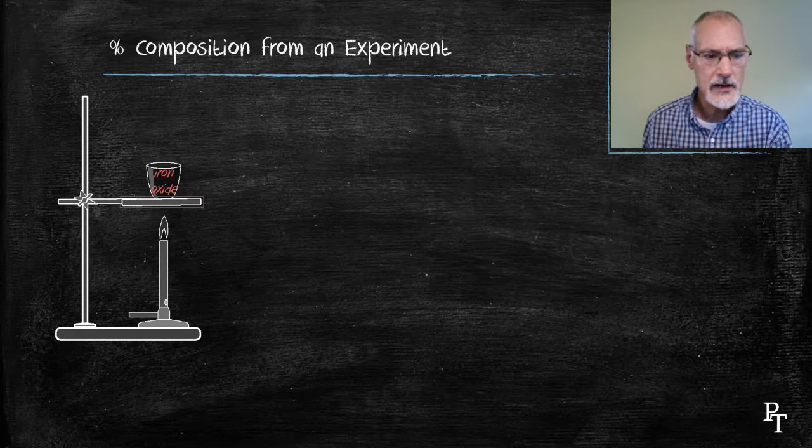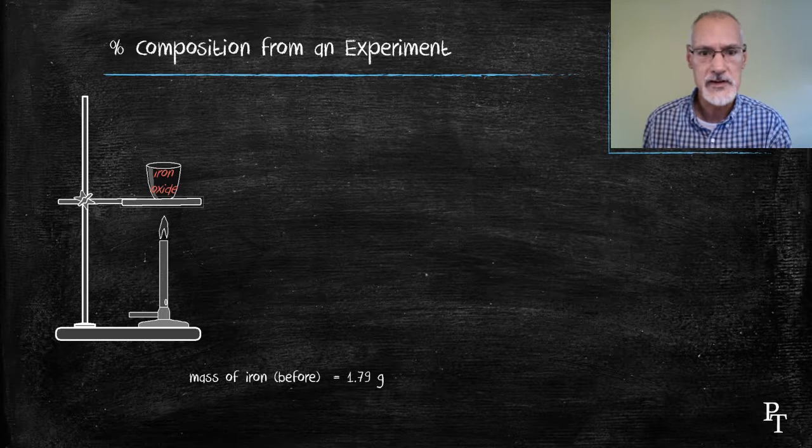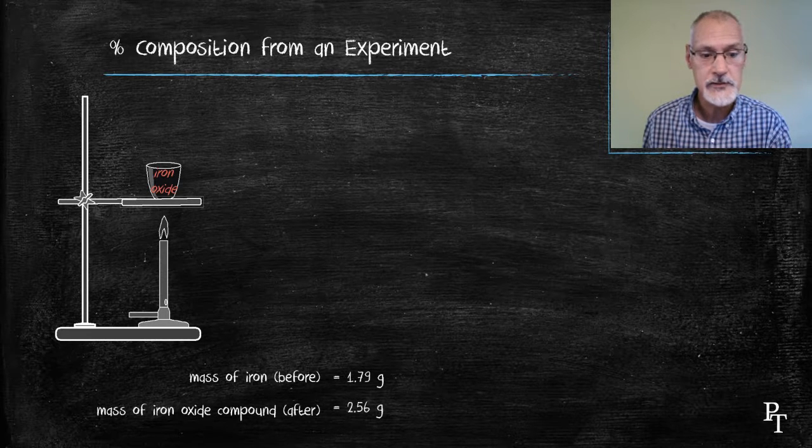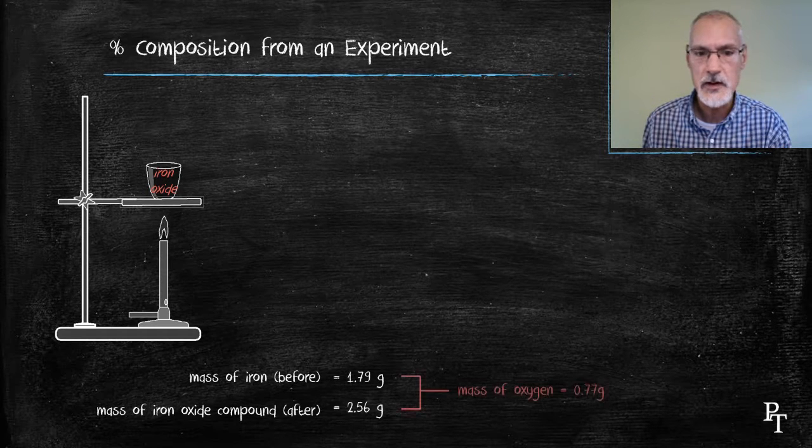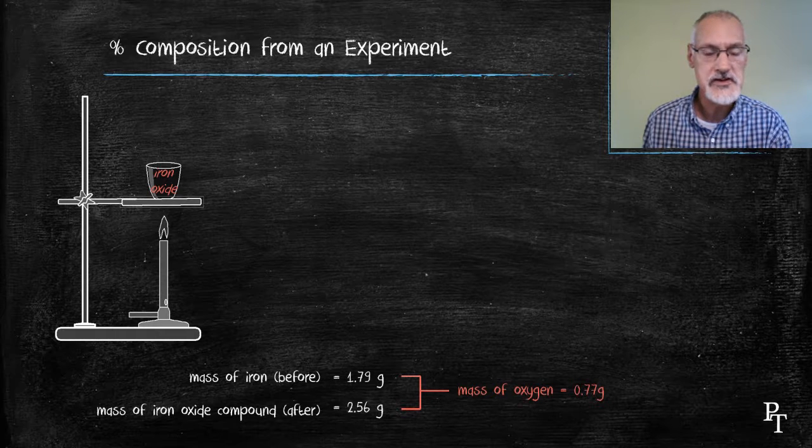I'll record some of the weighings here. The mass of the iron before the experiment was 1.79 grams and the mass of the iron oxide that formed after was 2.56. The difference between these two masses would correspond to the mass of oxygen.